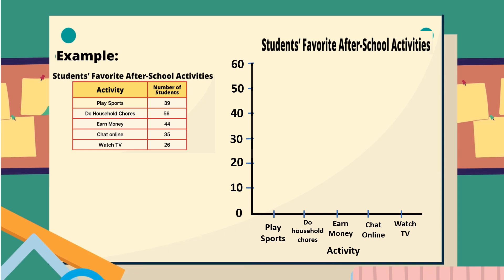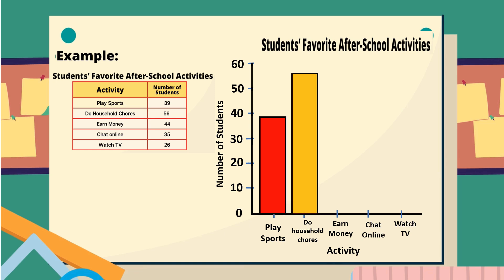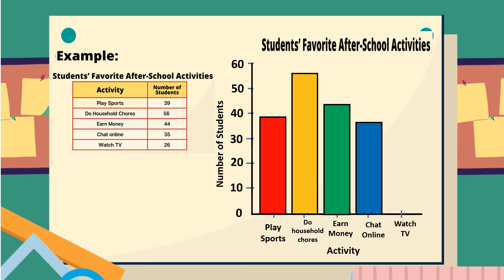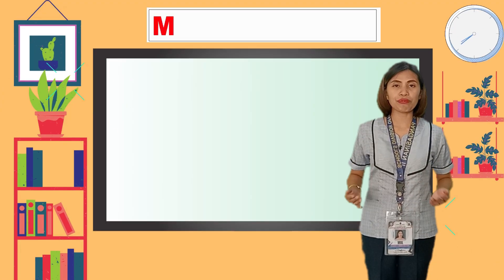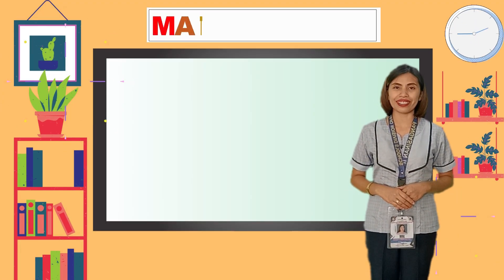Lastly, draw the bars according to the given data. For play sports, we have 39; do household chores, 56; earn money, 44; chat online, 35; and lastly, watch TV, 26. It is now time to exercise our brain.